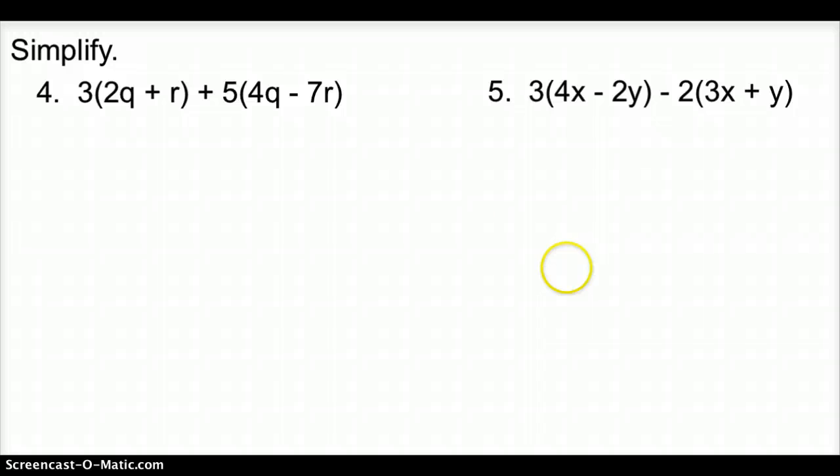Last two here. Now we're asked to simplify. Now we know what the distributive property is, but now we have two of them, so we have to take the distributive property to both of these guys. Remember that we're multiplying here on this first one, so it's going to be 6q plus 3r, and then we multiply back here 2 to be plus 20q minus 35r.